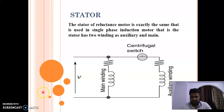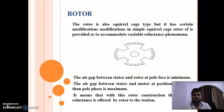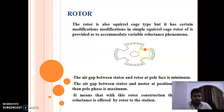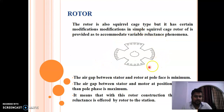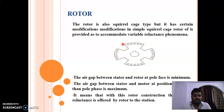Now let's come to the rotor part. The rotor is also a squirrel cage type, but there are certain modifications. These modifications have been done to the simple squirrel cage motor so as to accommodate the variable reluctance phenomena. The simple squirrel cage rotor has been modified to form a salient pole type construction. These salient poles facilitate the variable reluctance phenomena. Thick copper bars have been placed on all four rotor poles.